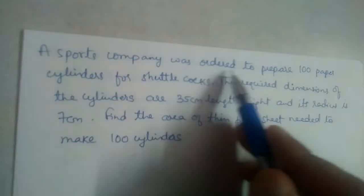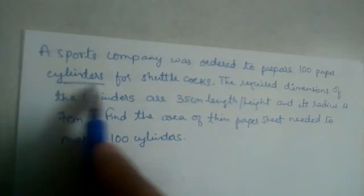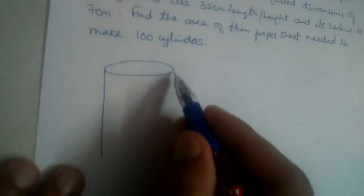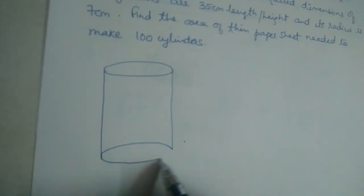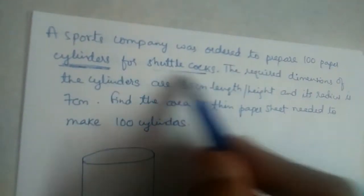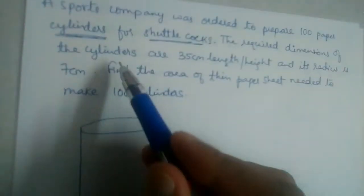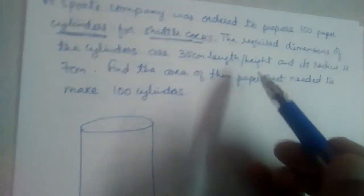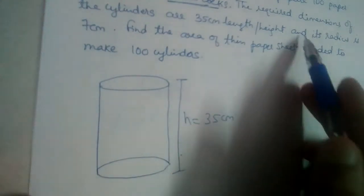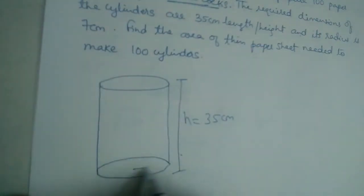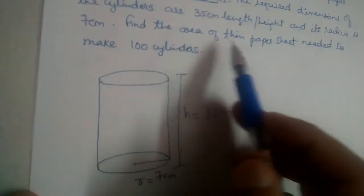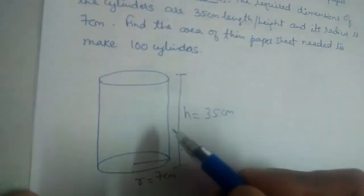A sports company was ordered to prepare 100 paper cylinders. Let us draw a cylinder. Why are we having the cylinders? To place shuttlecocks. The required dimensions are: height is equal to 35 cm and its radius is 7 cm. Find the area of the thin sheet paper needed to make 100 such cylinders.